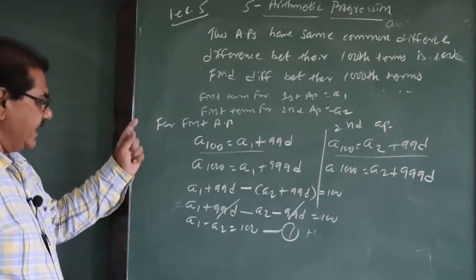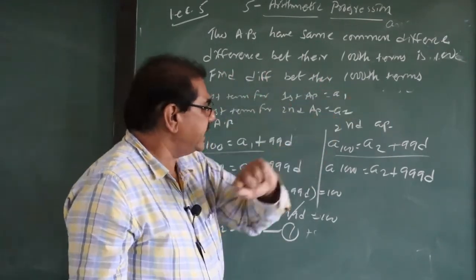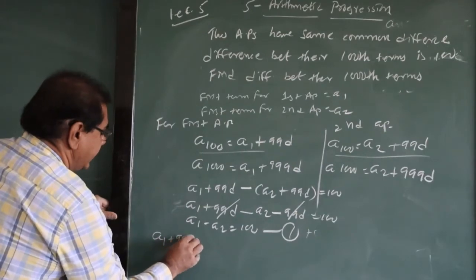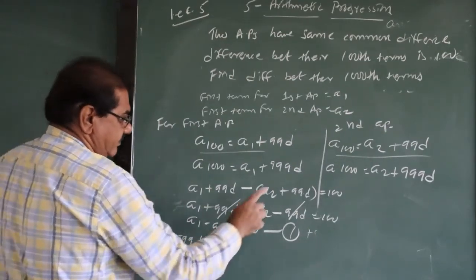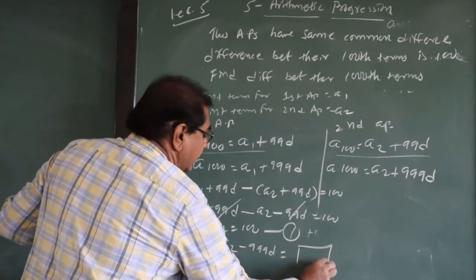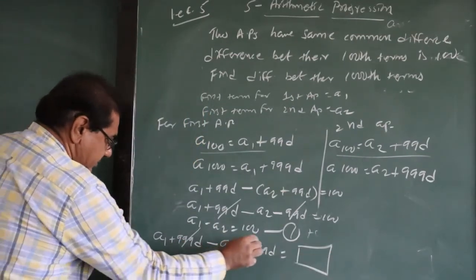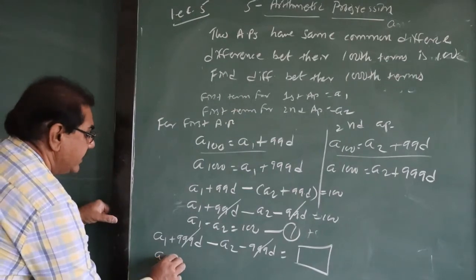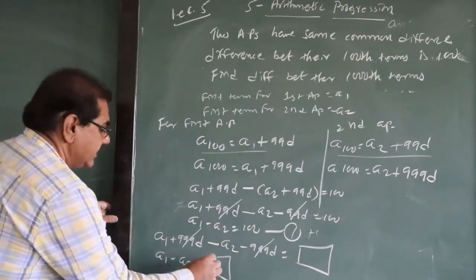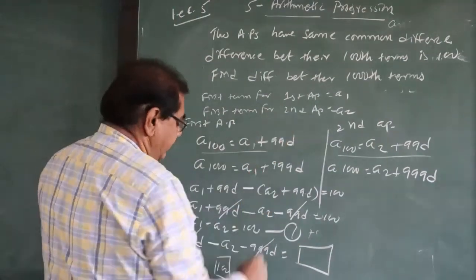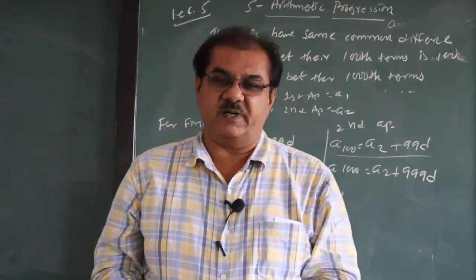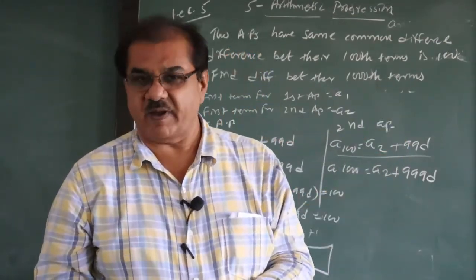Now finding the difference between their 1000th terms: (A1 + 999d) - (A2 + 999d). The 999d terms cancel, leaving A1 - A2 = 100. So the difference between the 1000th terms is also 100. Friends, for this session it is done. In the next session we will take more questions from exercise 5.2. Thank you very much.